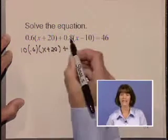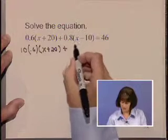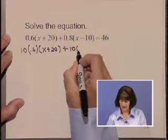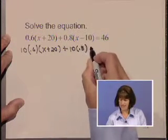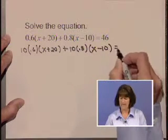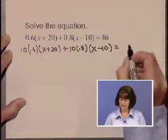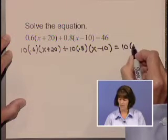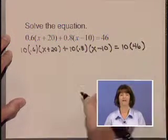We also want to take 10 times the group of factors in the second part. So 10 times 0.8 times the quantity x minus 10. And don't forget to take 10 times 46 on the right side of the equation as well.